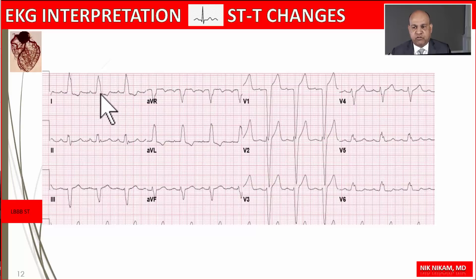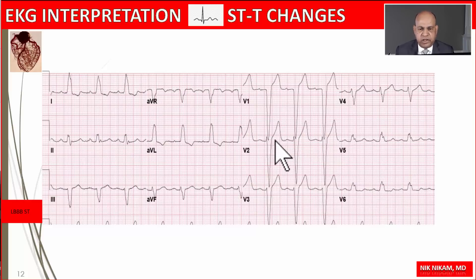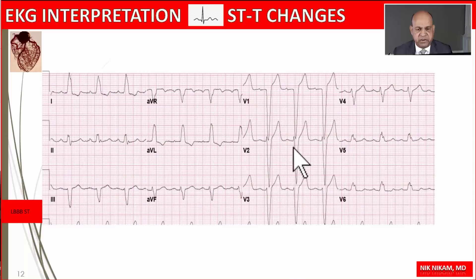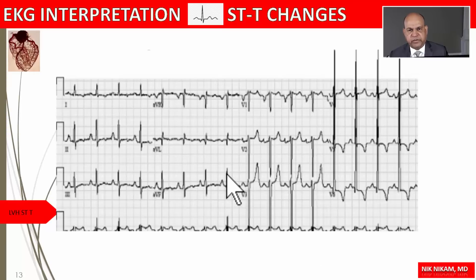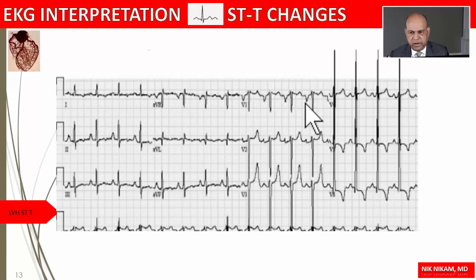To summarize, in patients with left bundle branch block it is common to see discordant ST-T changes — that is, down-sloping ST segment with T wave inversion discordant to the direction of the major QRS complex — and also frequently ST elevation and straightening of the ST segment along with J-point elevation in the anterior leads. In left ventricular hypertrophy, characterized by increased precordial voltages and left atrial enlargement, we see secondary ST-T changes similar to those in bundle branch block.